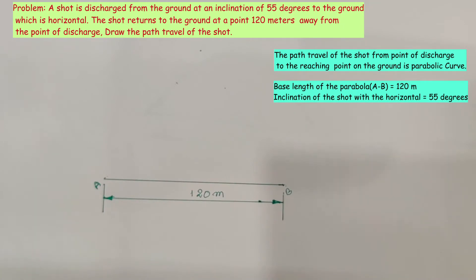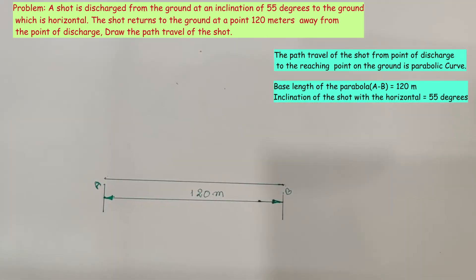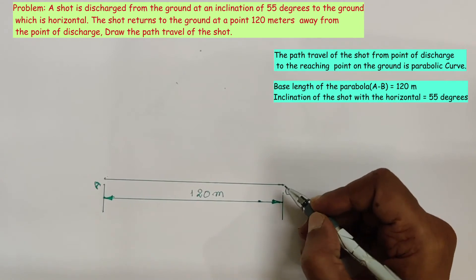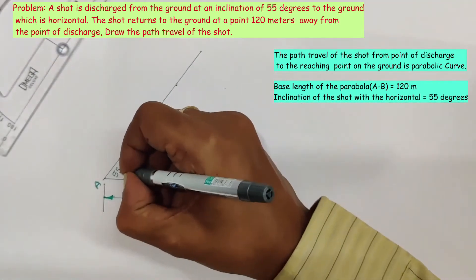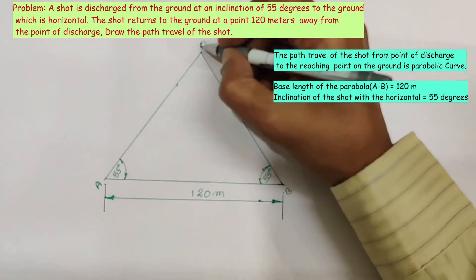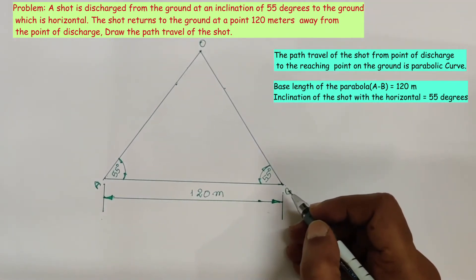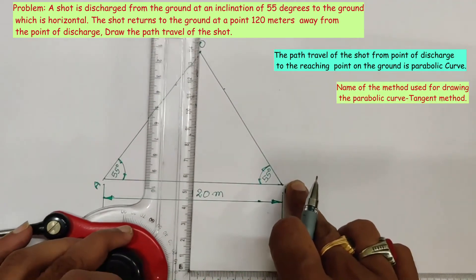Generally for construction of the parabola they supply base length and axis height. Instead of giving axis height, the inclination of the shot with the horizontal is given as 55 degrees. So at A as well as B, with an angle of 55 degrees to the ground, draw two inclined lines. These two inclined lines meet at a point O. Now OAB is the isosceles triangle. Within this isosceles triangle we need to draw the parabolic curve using the tangent method. Then draw a perpendicular bisector to AB passing through point O.